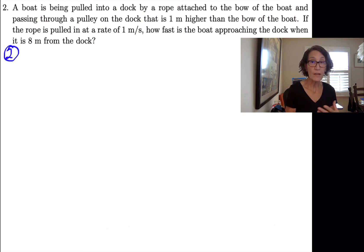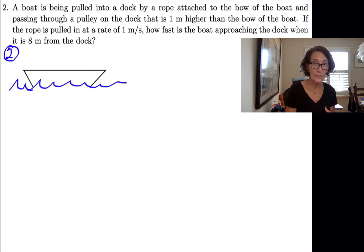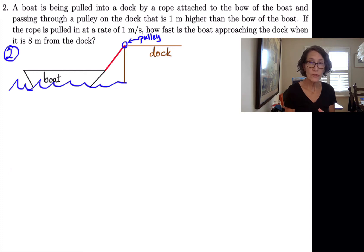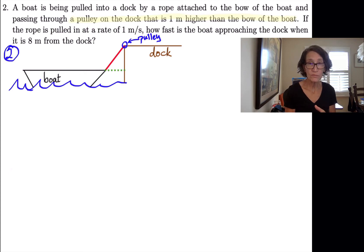It says, if the rope is being pulled in at a rate of one meter per second, how fast is the boat approaching the dock when it's eight meters from the dock? We read that a couple of times, try to picture what's going on, and the best way to understand it is to just move on to step two. Step two is draw the picture. Here's the water, here's a boat in the water, and here's the dock. The boat is being pulled in by a rope — that red line is the rope. It's attached to the bow of the boat and going through a pulley on the dock. I'm going to label the things that are not changing. The only thing that's not changing is the pulley is one meter higher than the bow of the boat.